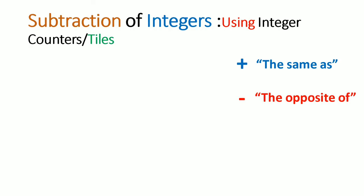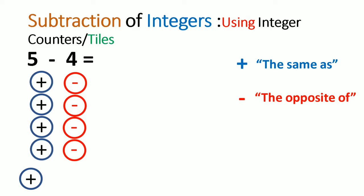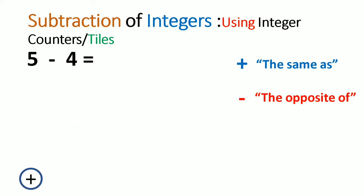Now let's take a look at some problems. If I had 5 minus 4, then this can be executed by putting 5 positive integer counters and 4 negative integer counters. We then pair these counters, and since they are paired they nullify each other. So 5 minus 4 would be equal to 1.